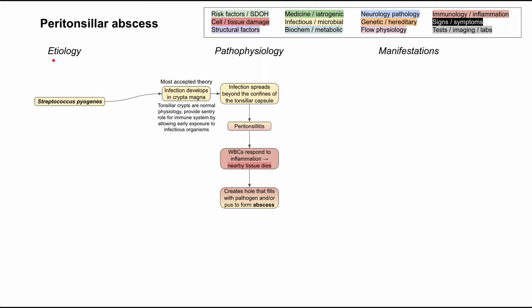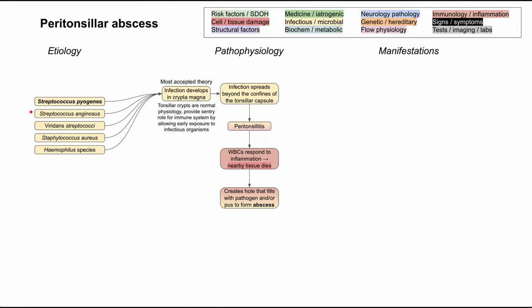It's largely bacteria. The most common bacteria found in peritonsillar abscess is Streptococcus pyogenes — S. pyogenes is the most common and will be bolded for that reason. There are other bacteria that play a role as well: Streptococcus anginosus, Viridians Streptococcus, Staph aureus, and Haemophilus species. In general, you usually have a mix of these bacteria with others not listed here, so it's often a polymicrobial environment.